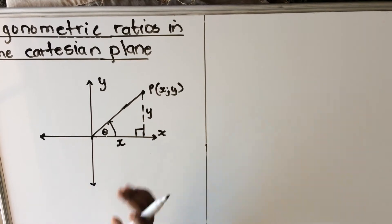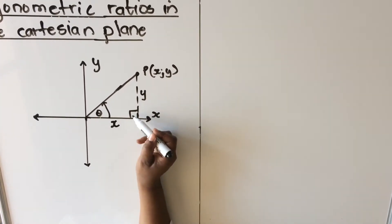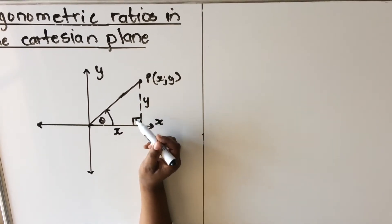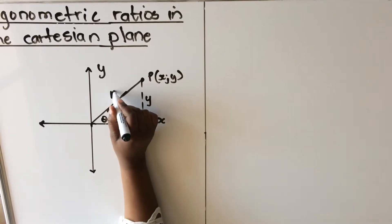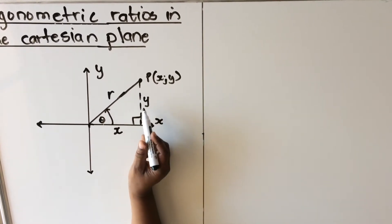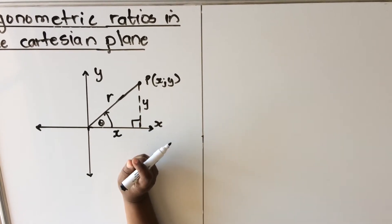Now, we're going to use this information. Oh, I forgot one thing. This line that is opposite the 90 degrees is called R, which is the hypotenuse. So you have your x, your y and your R. So let's see how this relates to trig ratios.